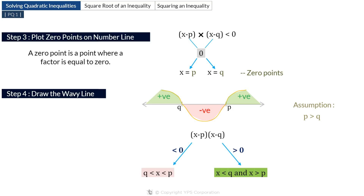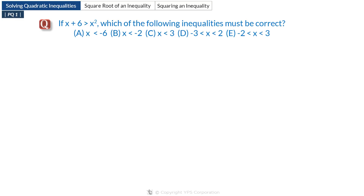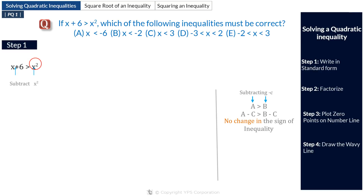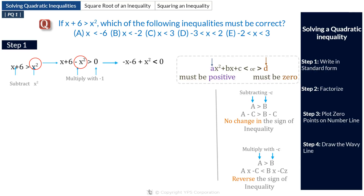Let's solve a practice question. If x plus 6 is greater than x squared, which of the given inequalities must be correct? The given inequality is not in standard form. Subtracting x squared from both sides gives x plus 6 minus x squared greater than 0. The coefficient of x squared is still negative, so we multiply both sides by minus 1, reversing the sign. We get minus x minus 6 plus x squared less than 0, which rearranges to x squared minus x minus 6 less than 0.